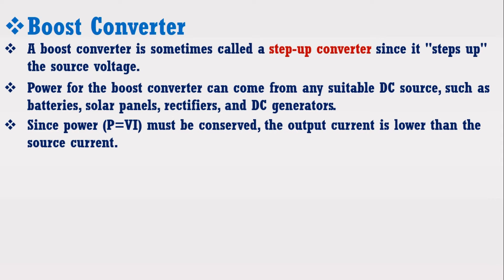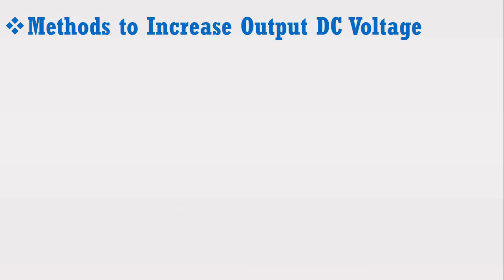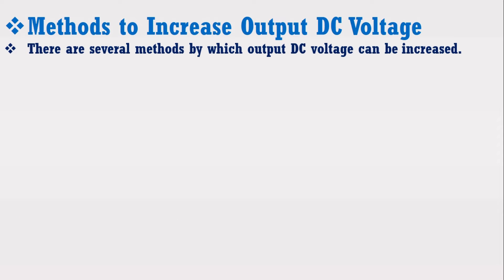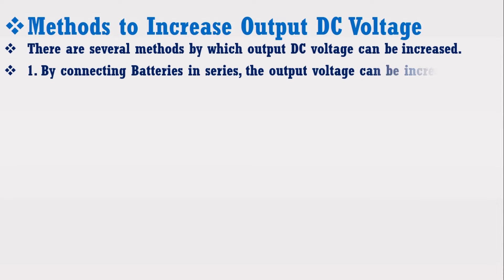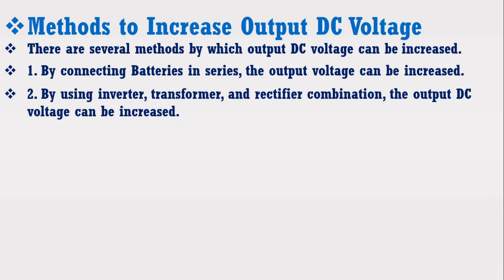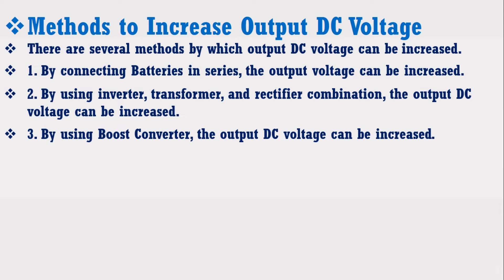There are several methods by which output DC voltage can be increased. Number 1: by connecting batteries in series, the output voltage can be increased. Number 2: by using an inverter, transformer, and rectifier combination, the output DC voltage can also be increased. Number 3: by using a boost converter, the output DC voltage can also be increased.